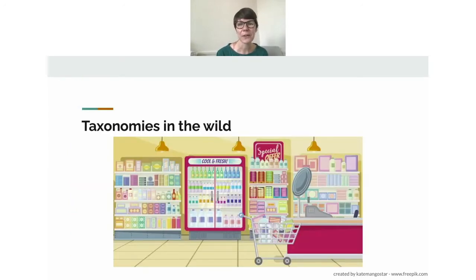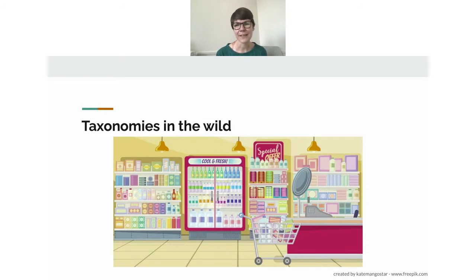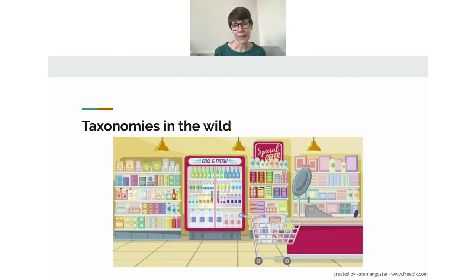Taxonomies also exist in the real world. When you go to the grocery store, you're navigating through a taxonomy. You know to go to the produce section for fresh fruits and vegetables, and to the canned section for canned goods. You'd never expect a fresh tomato next to the canned tomatoes, even though they're both tomatoes. Grocery stores are designed and standardized so you have a rough idea where everything is, allowing fast, intuitive shopping. Taxonomies also help behind the scenes for search and machine learning products.